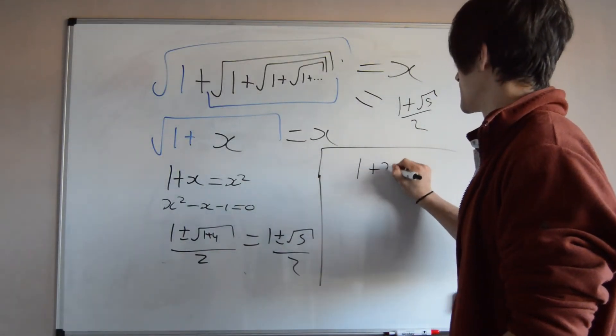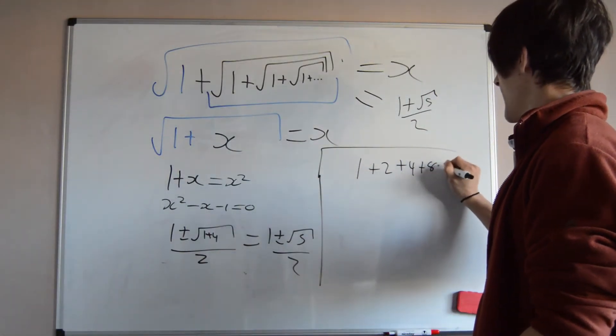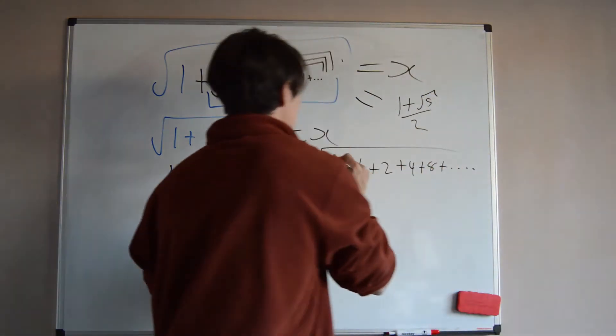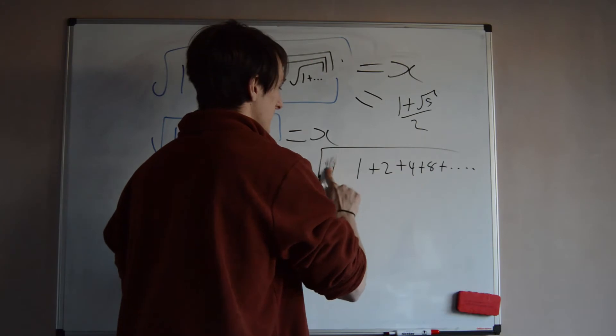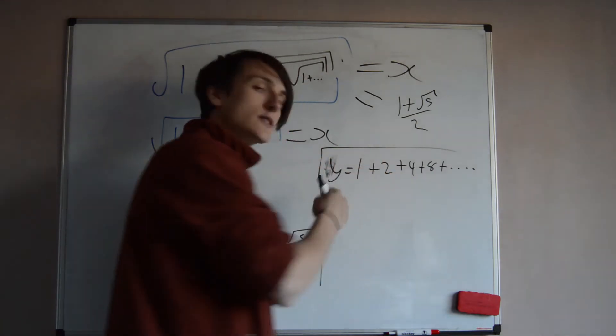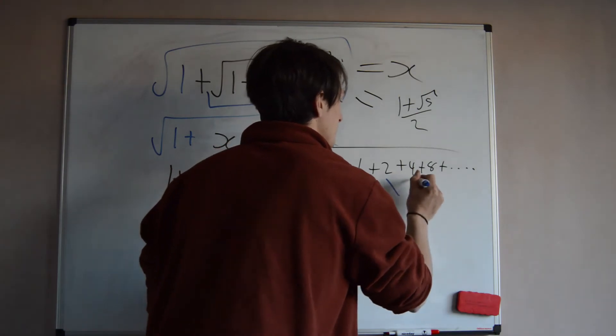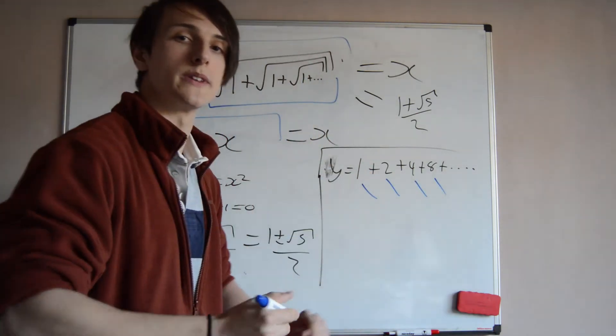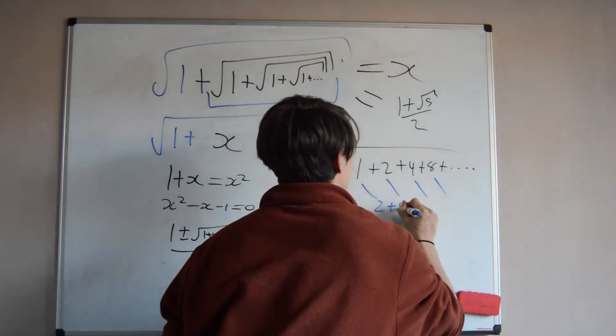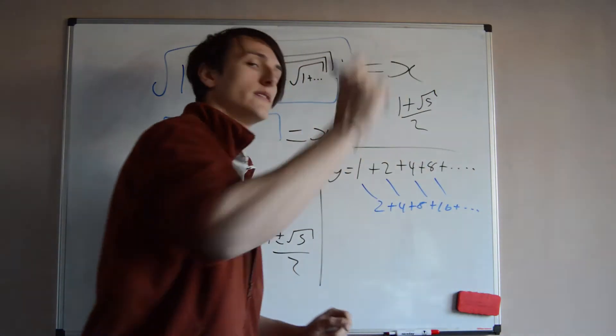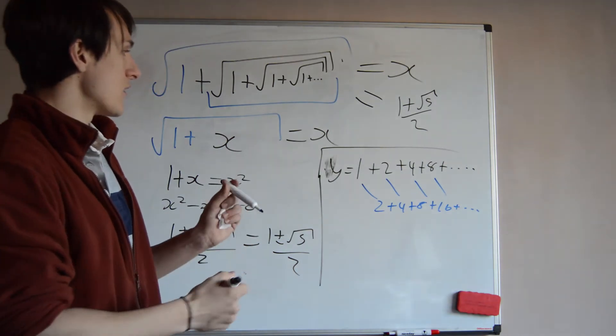Let's say we have 1 plus 2 plus 4 plus 8 plus dot dot dot. We just double each time, just adding this together. Well let me just say that this is equal to... I'll use a different method. Let's say this is equal to y. Okay, well let's just double y. So double y, we just double each time. So we get 2 plus 4 plus 8 plus 16 plus dot dot dot, infinitely. And it carries on forever.